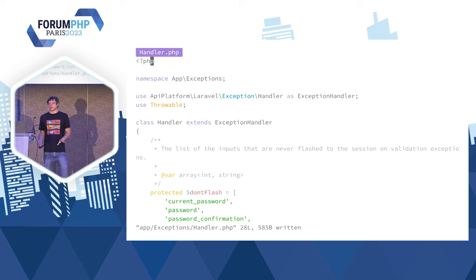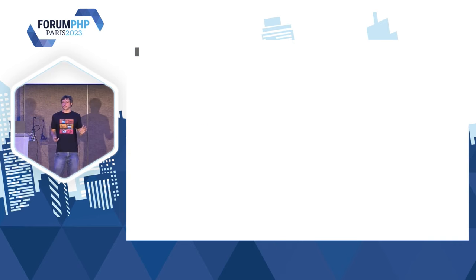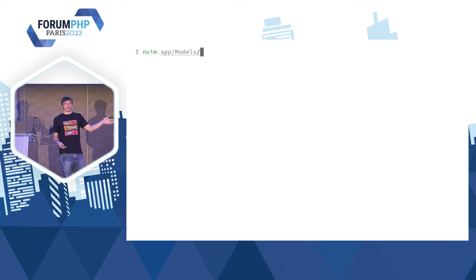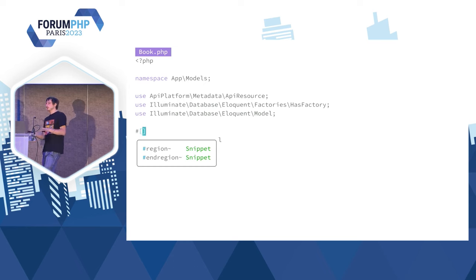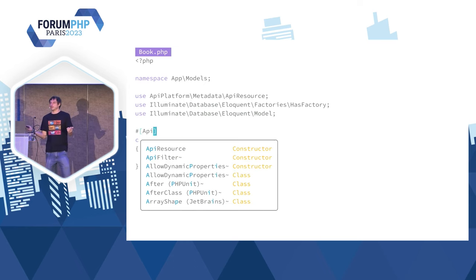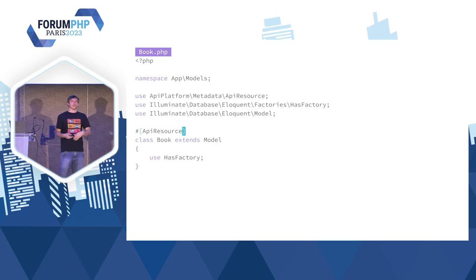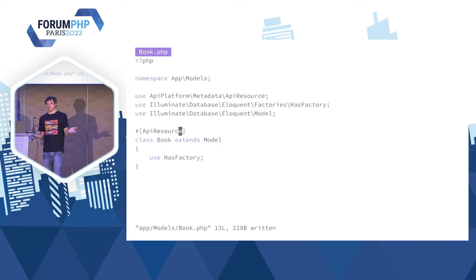Une fois que ça s'est branché, j'ai une dernière étape : je vais aller ouvrir le modèle Eloquent et apposer mon attribut API Resource dessus. Ceci devrait avoir comme conséquence de vous proposer une API REST HyperMedia toute fonctionnelle. Vous êtes prêts ?